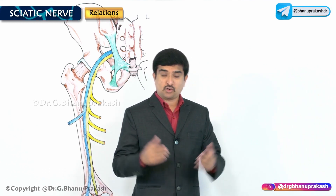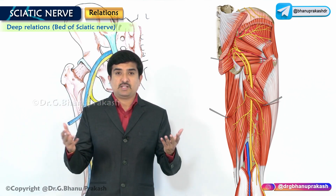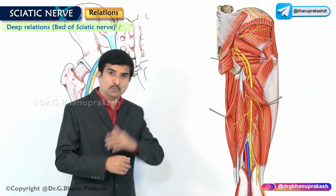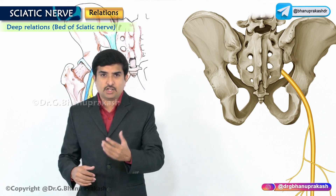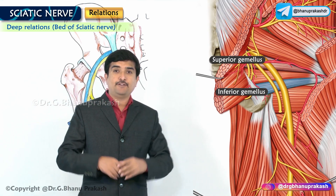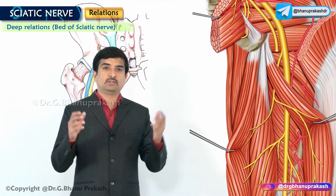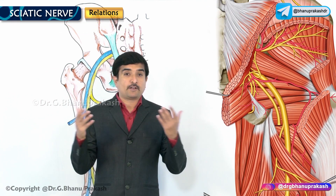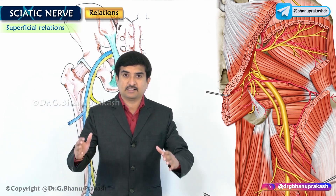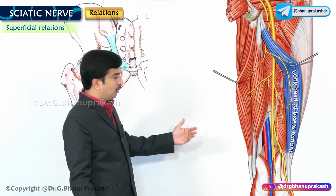Regarding the relations of the sciatic nerve, the deep relations form the bed of the nerve. From above downwards, the sciatic nerve is related to the posterior surface of the body of the ischium, obturator internus, superior and inferior gemellus muscles, quadratus femoris, and adductor magnus. For superficial relations, from above downwards, the sciatic nerve is related to the gluteus maximus in the gluteal region and the long head of the biceps femoris in the thigh.